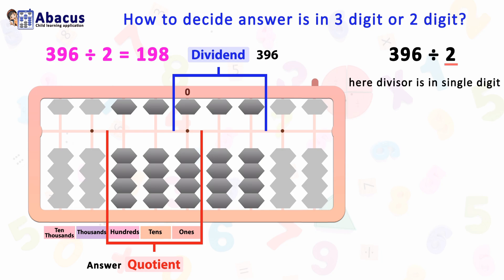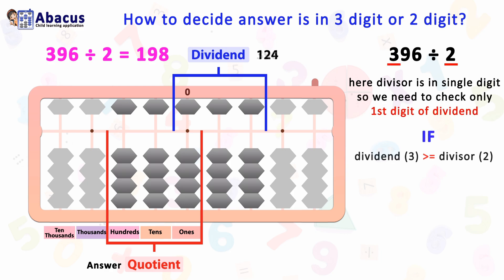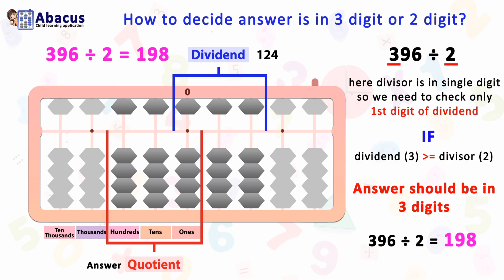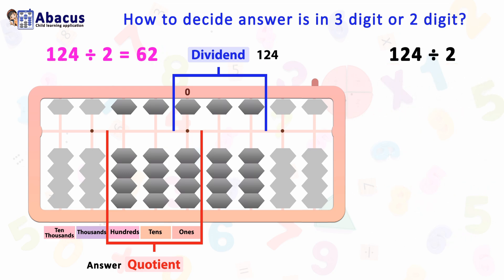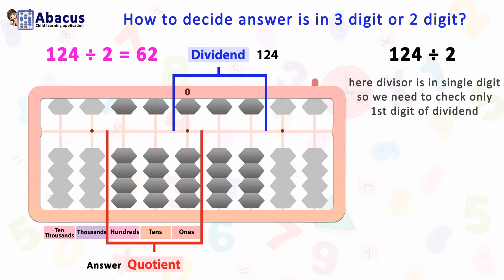So we need to check only the first digit of the dividend. If the first digit of the dividend is bigger than or equal to the divisor, then the answer should be in three digits. Now check with 124 divided by 2. Here the same rule applies — we check the first digit of the dividend. The divisor 2 is bigger than the dividend's first digit 1, so the answer should be in two digits.